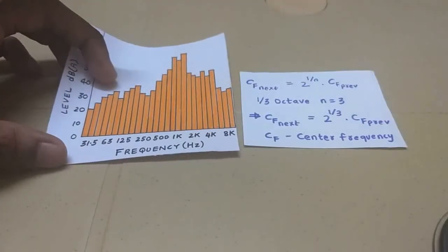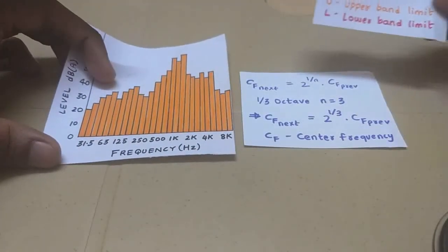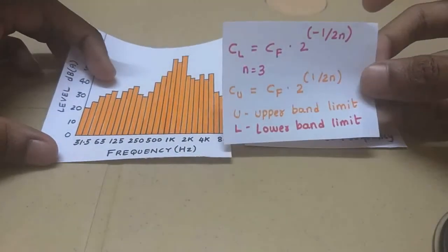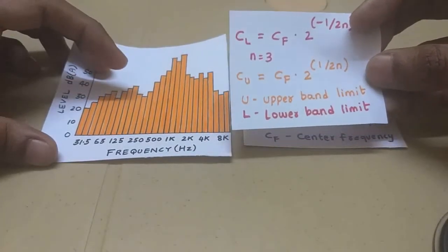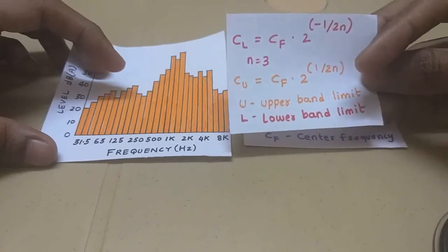Now let's consider the upper and lower limits. The upper and lower limits are given by this equation. Again, just put n equals 3 because we're considering octave 1/3rd band, and you plug in the values and you get the upper and lower limit for a given center frequency.